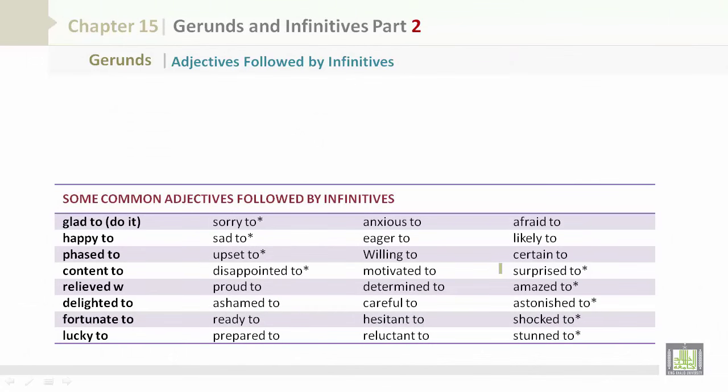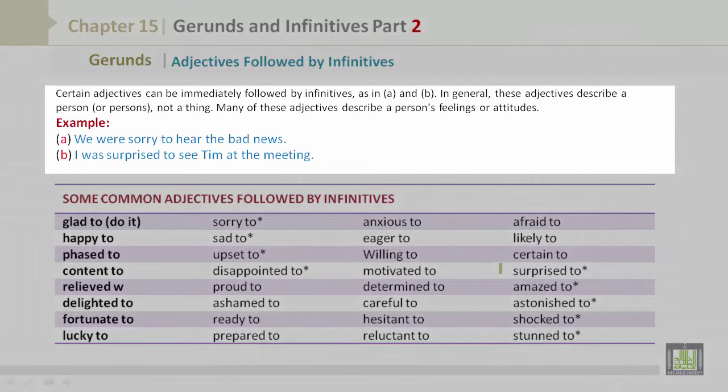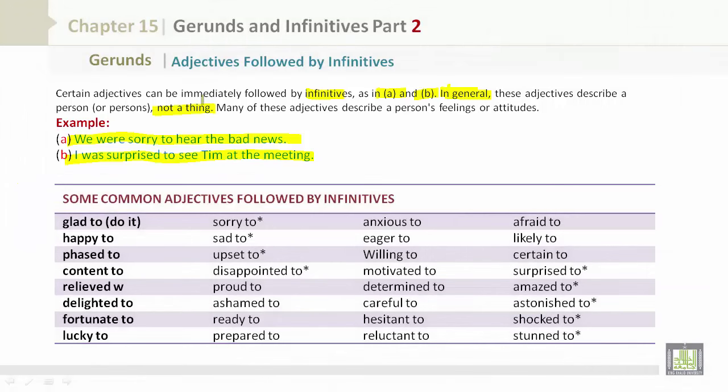Adjectives followed by infinitives. Certain adjectives can be immediately followed by infinitives, as in Example A and B. Let's read Example A: We were sorry to hear the bad news. B: I was surprised to see Tim at the meeting. In general, these adjectives describe a person or person's, not a thing. Many of these adjectives describe a person's feelings or attitudes.